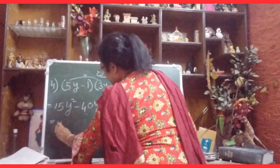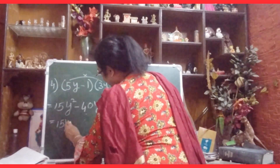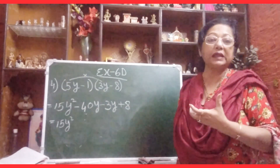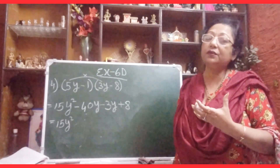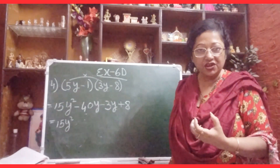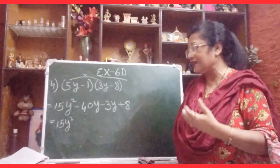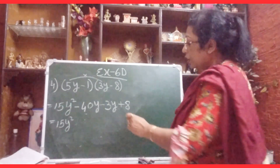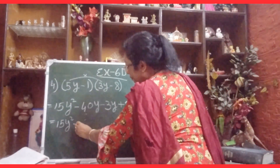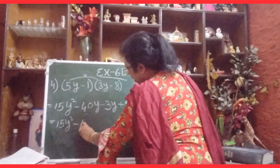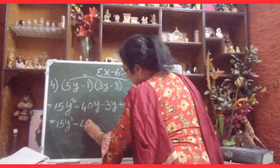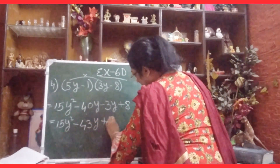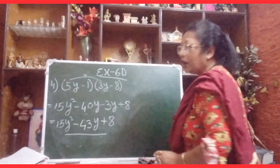Now combining: minus 40y and minus 3y — both are minus, so we add them: 40 plus 3 is 43, giving minus 43y. So the final answer is 15y squared minus 43y plus 8.